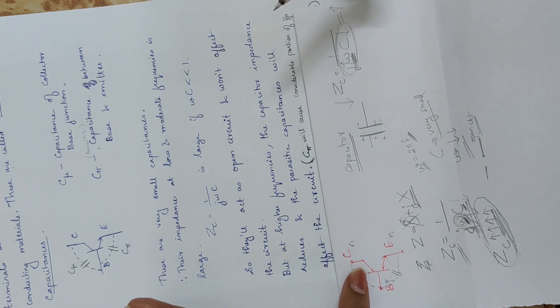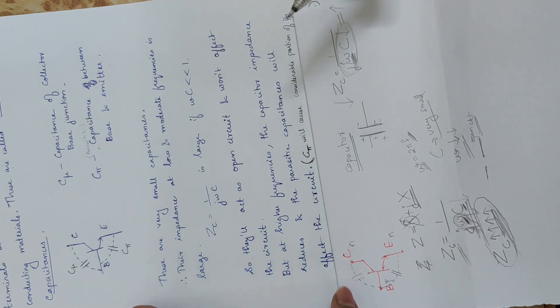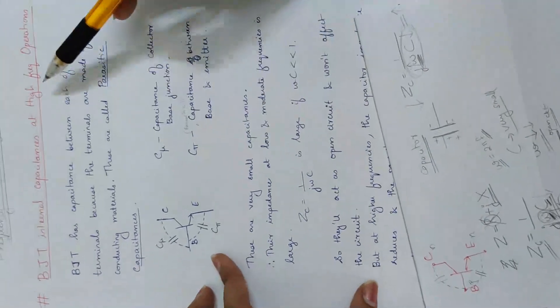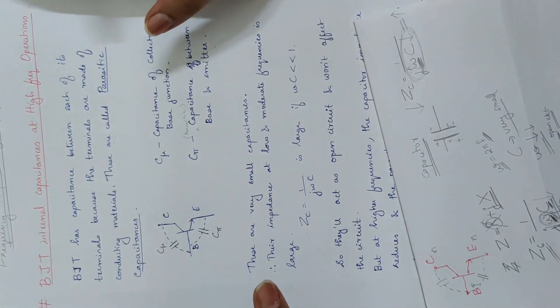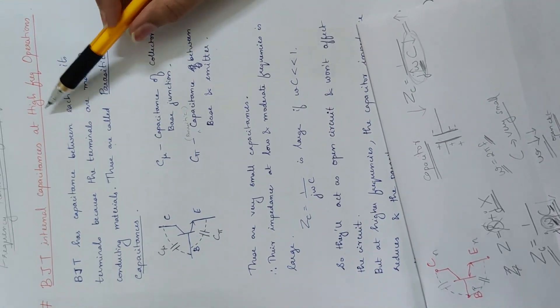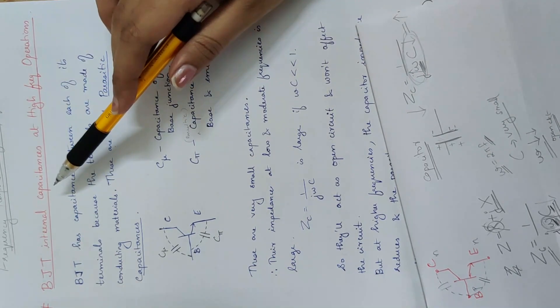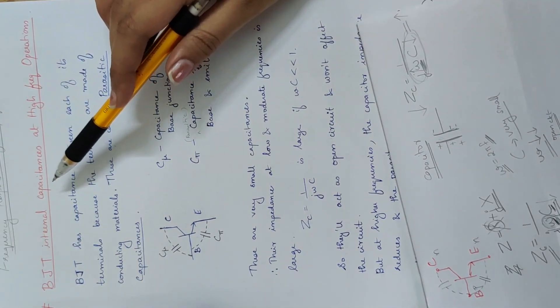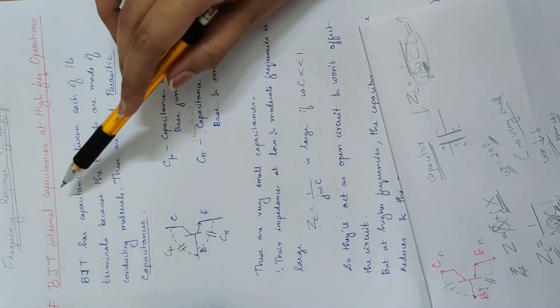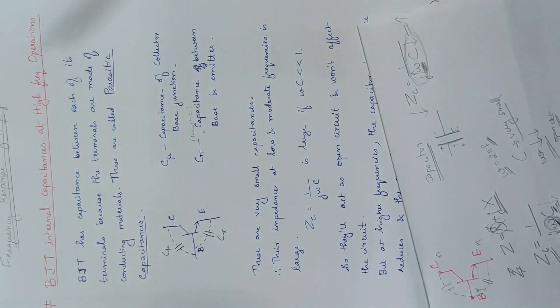At higher frequencies, capacitor impedance reduces and the parasitic capacitances begin to affect the circuit. So: at low frequency, internal parasitic capacitance has no effect; at high frequency, the internal parasitic capacitance does affect the circuit.